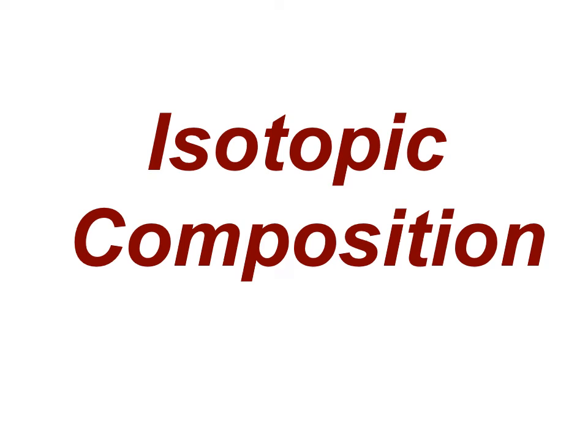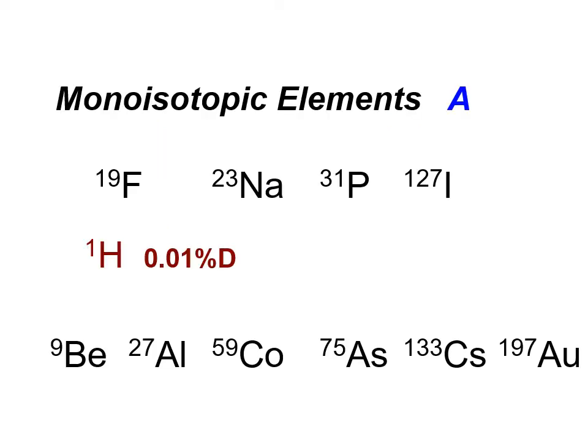Let us look at isotopic composition of molecules. To start with, we have elements that are monoisotopic, having only one isotope: fluorine, sodium, phosphorus, iodine. Hydrogen has around 0.01 percent of deuterium, which can be important when you have molecules of very high molecular weight and very high number of hydrogens. Beryllium, aluminum, cobalt, arsenic, cesium, and gold are other monoisotopic elements, but they are rather exotic.